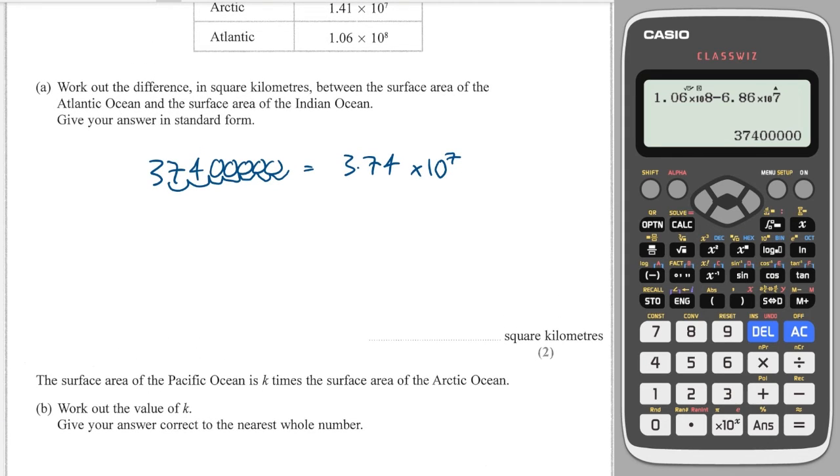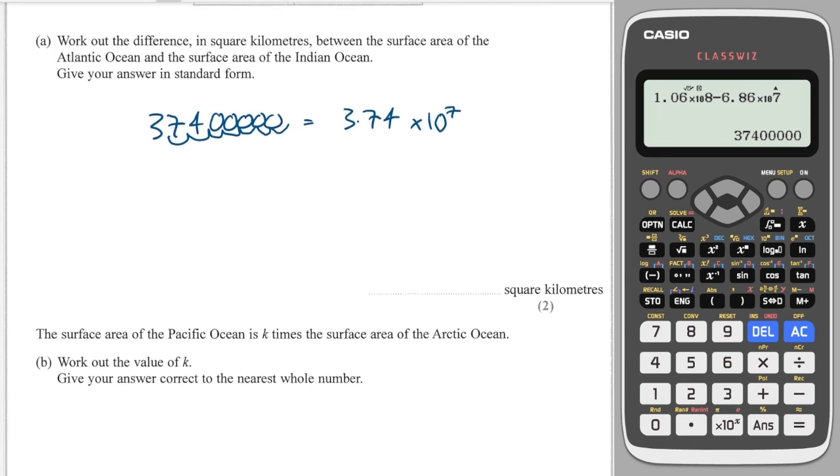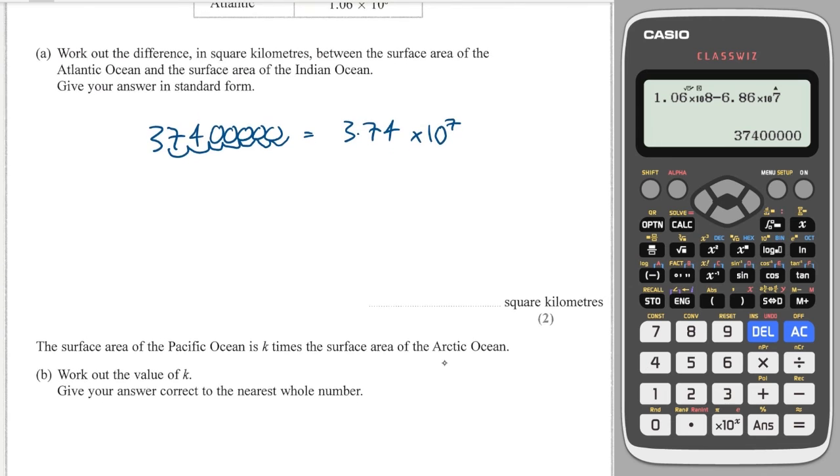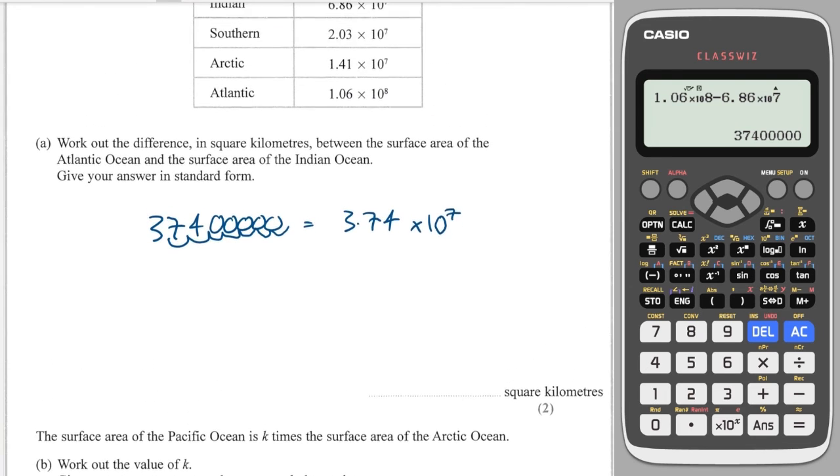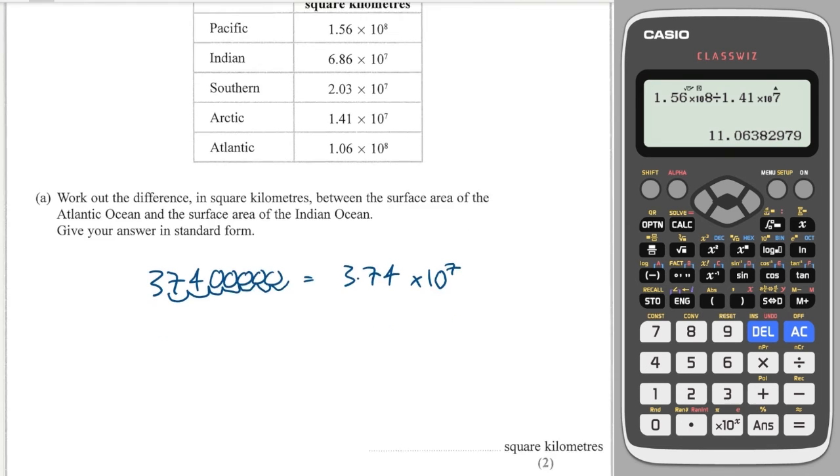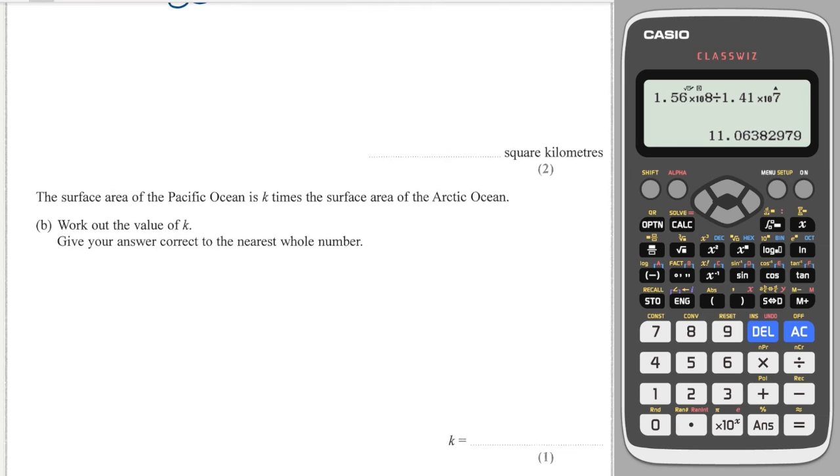It says, the surface area of the Pacific Ocean is k times the surface area of the Arctic. Work out the value of k. Well, that means I'll need to do the Pacific, then divide it by the Arctic to get the scale factor. So I'll go to my calculator, and I would do the Pacific Ocean, and I would divide that by the Arctic. And that would give me roughly 11 times. It's the nearest whole number, 11.